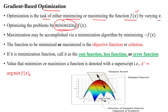Maximization can be used whenever we need to maximize profits, for example. When we want to achieve maximization, we can use the minimization algorithm itself by multiplying minus 1 with f(x). So a minimization problem can be converted or transformed into a maximization problem.